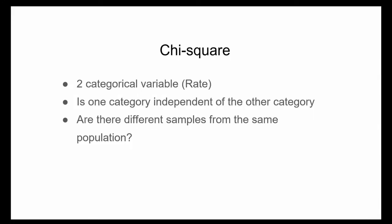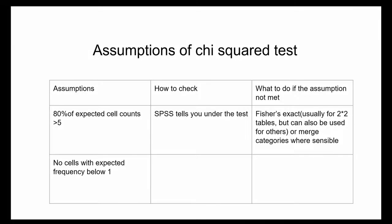When to use chi-square: you need two categorical variables, and you should ask yourself whether one categorical variable is independent from the other, and whether there are different samples from the same population. Regarding chi-square assumptions, the expected value of cells should be five or more in at least 80% of the cells, no cell should have an expected value of less than one, and data in the cells should be in frequencies or counts of cases rather than percentages or other transformations. Use SPSS to verify these conditions.